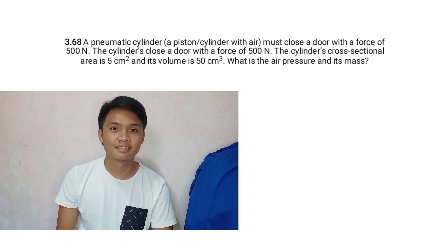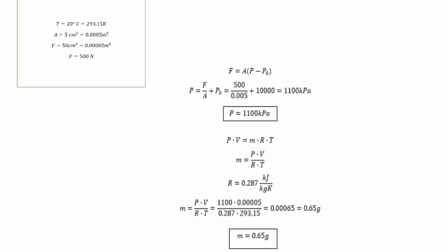Let's start! We are given the following data for piston cylinder with air. T equals 20 degrees Celsius equals 293.15 K. A equals 5 cm squared equals 0.0005 m squared.